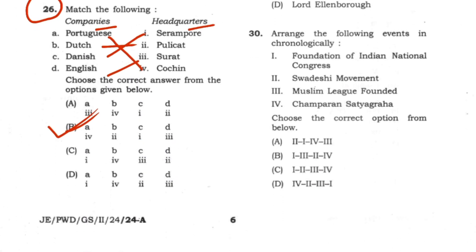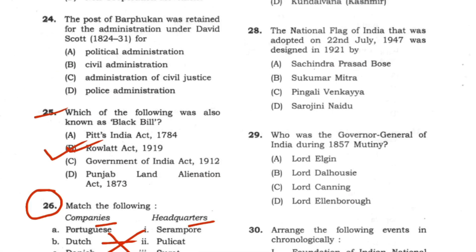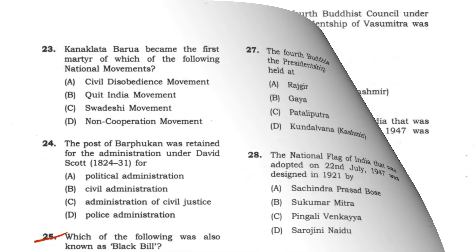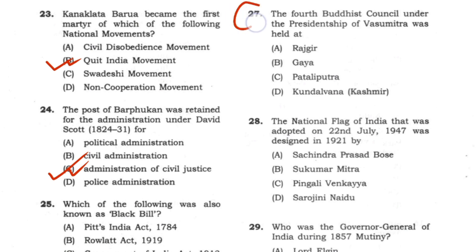Question number 27: The 4th Buddhist Council under the presidentship of Vasumitra was held at Kundalavana, Kashmir. The first Buddhist council is also referenced for context.